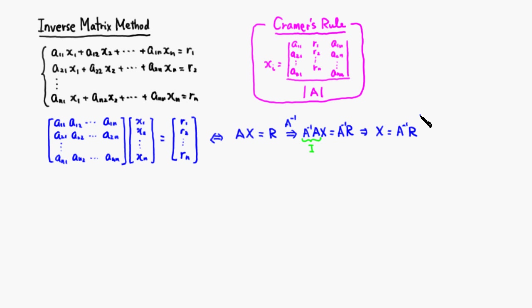I want to talk about the connection between this method and Cramer's rule — these are actually equivalent methods, and Cramer's rule is just done component by component. Cramer's rule says: if you want to find the ith variable, replace the ith column by the right-hand side, then divide by the determinant of the coefficient matrix.